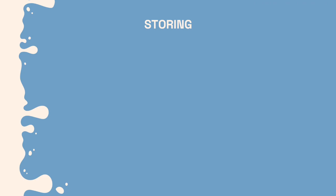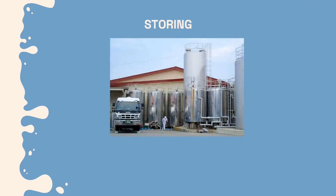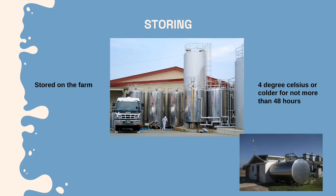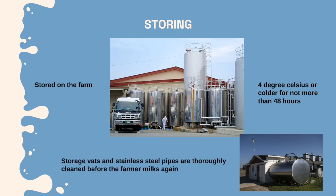As for the storing stage, milk storage vats or silos are refrigerated and come in various shapes and sizes. Milk is usually stored on the farm at 4 degrees Celsius or colder for no more than 48 hours. Vats and silos are agitated to make sure that the entire volume remains cold and that the milk fat does not separate from the milk. After the milk has been collected, storage vats and stainless steel pipes are thoroughly cleaned before the farmer milks again.